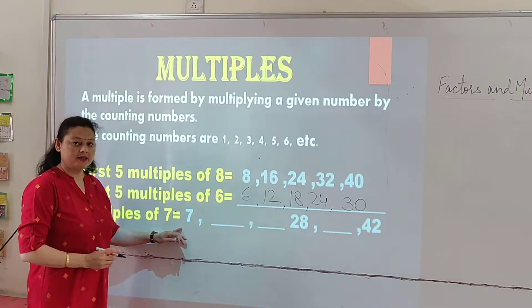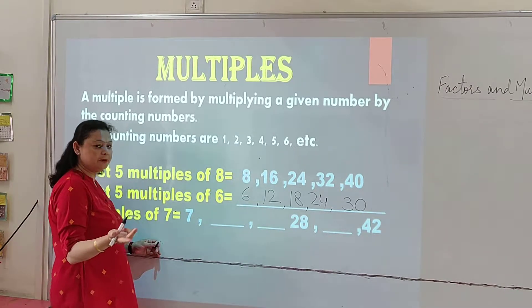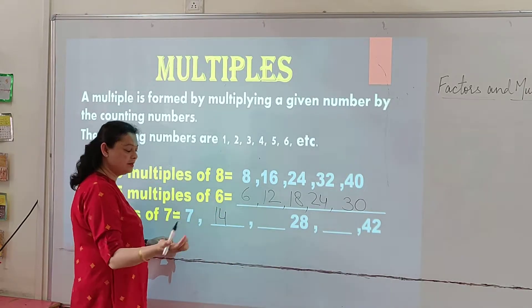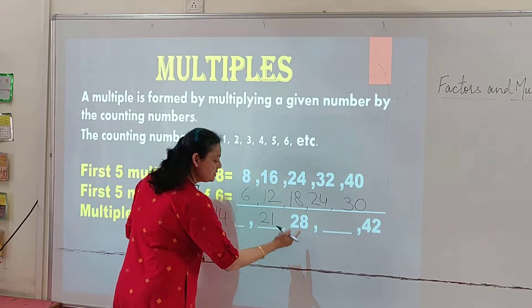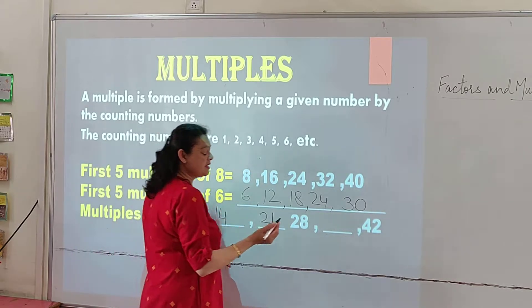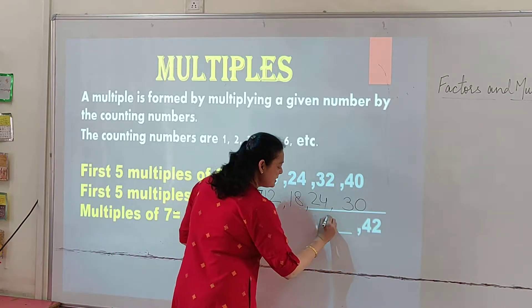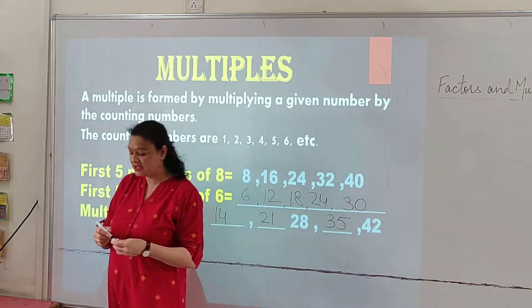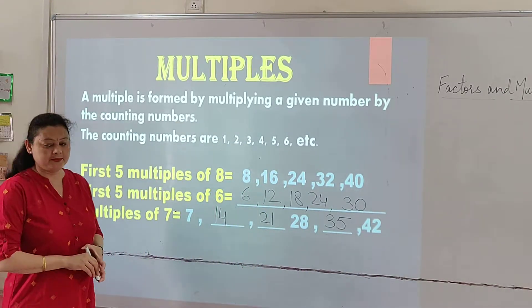Multiples of 7. 7 times 1 is 7. What will be the next multiple? 7 times 2 is 14, 7 times 3 is 21, 7 times 4 is 28. Then 7 times 5 is 35, and then 7 times 6 is 42. This is the main concept of multiples.